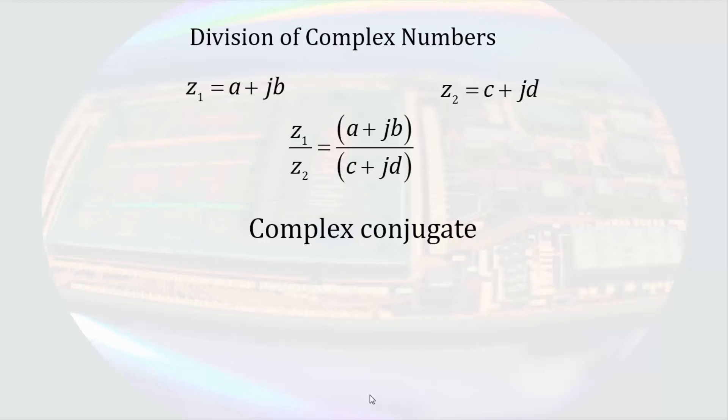To take the complex conjugate of a number, we simply change the sign of the imaginary component. The operation is denoted by the little star above the z. Here's what the complex conjugate does for us.